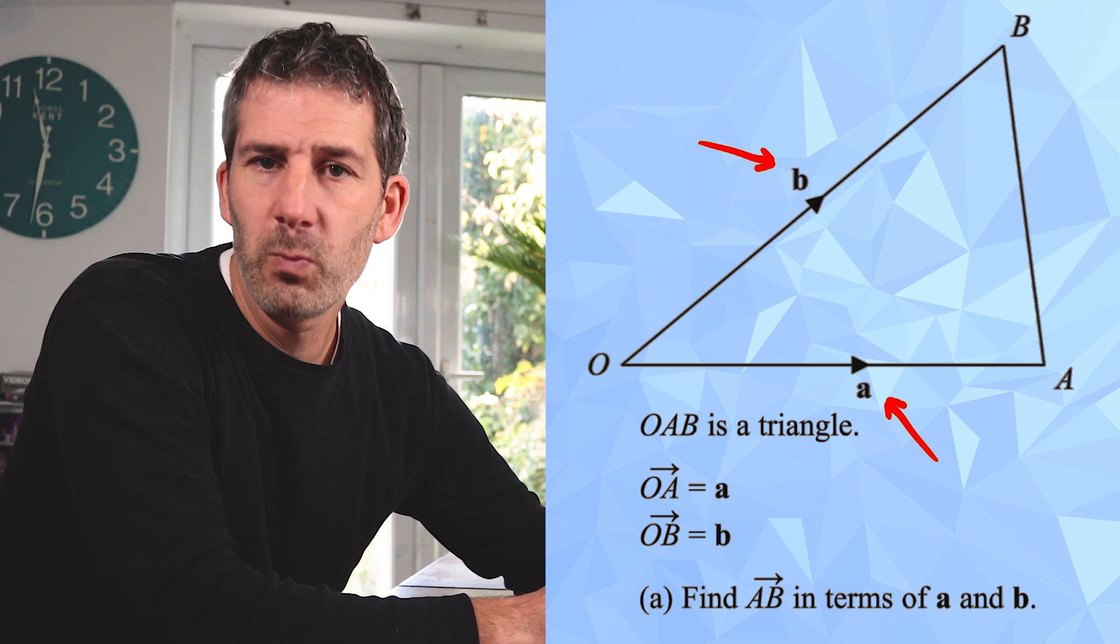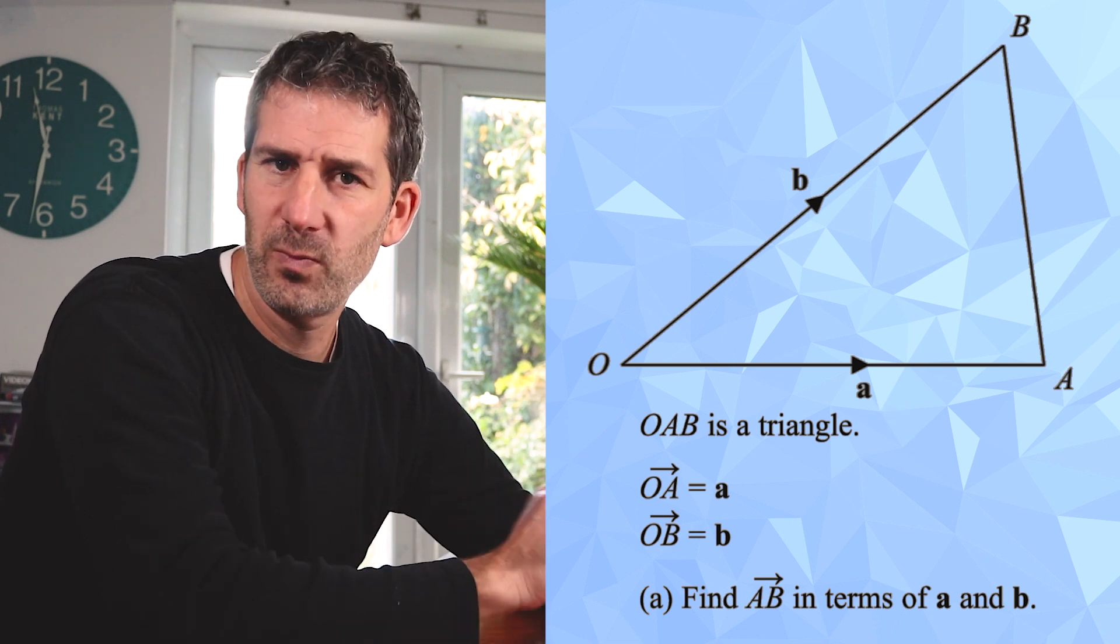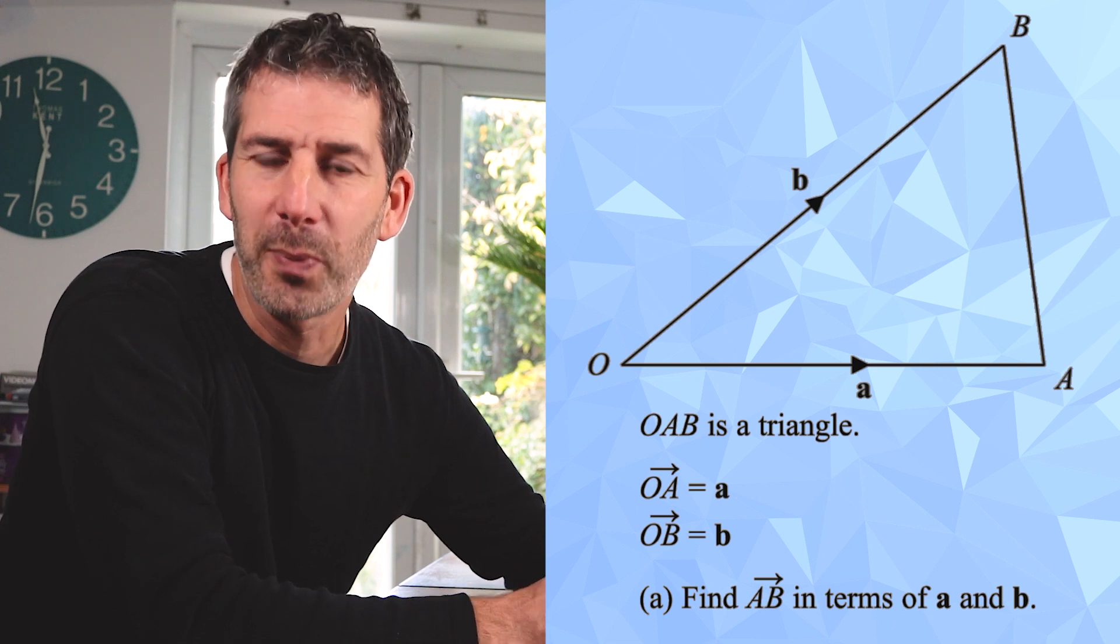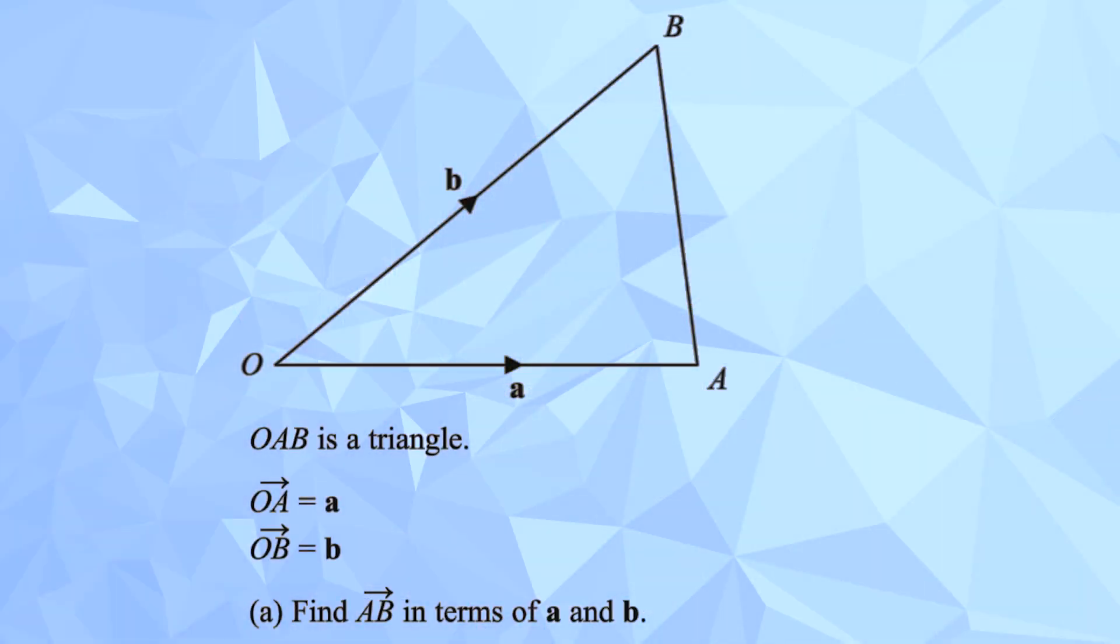They're written in bold there, but when we write them by hand we instead underline them because it is quite hard to write in bold. So I use an analogy to help me make sense of vectors. It's not perfect, but it definitely helped me to get my head around the basic idea of what's going on.